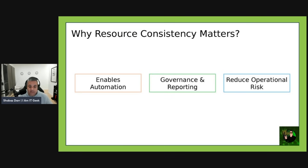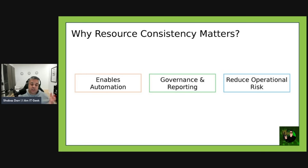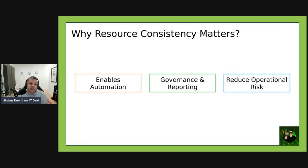Consistency improves governance and reporting, making it easy to track costs, ownership, and compliance. It also reduces operational risk — a predictable resource structure simplifies troubleshooting and auditing. For example, if you want to find all production virtual machines and naming is consistent, you just search for 'vm-prod' and bring them all up. That's why it's so important.